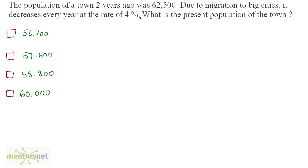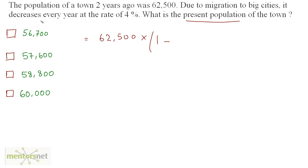Every data here is given — you just have to put it into the formula and get the answer. The present population equals the initial population, which is 62,500, times 1 minus r upon 100, because it is decreasing. r is 4%, raised to the power 2 because it was 2 years ago.